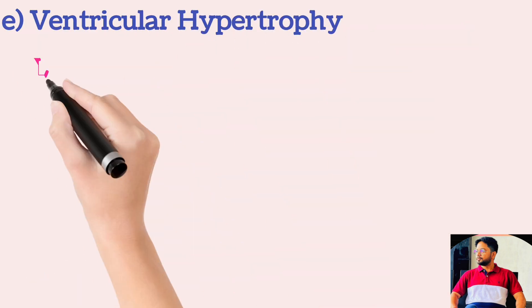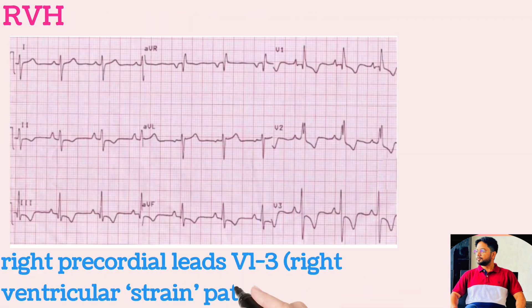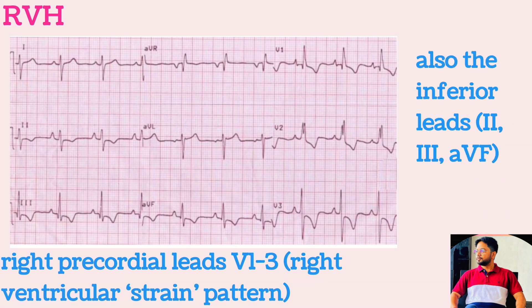Ventricular hypertrophy: Left ventricular hypertrophy produces T-wave inversion in the lateral leads 1, AVL, V5, V6, representing the left ventricular strain pattern with a similar morphology to that seen in left bundle branch block. Right ventricular hypertrophy produces T-wave inversion in the right precordial leads V1 to V3, representing the right ventricular strain pattern, and also in the inferior leads 2, 3, AVF.